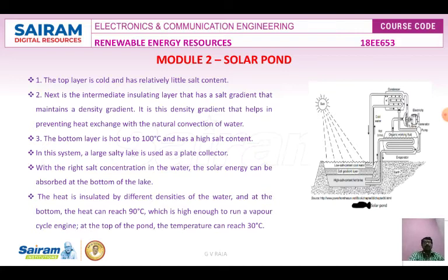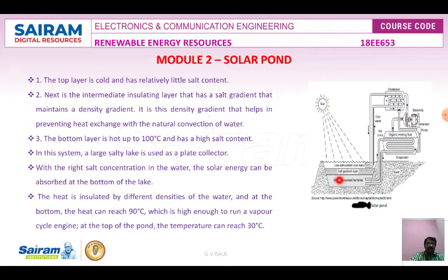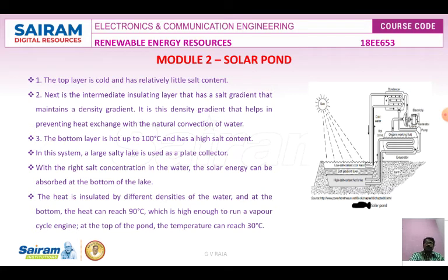To develop a solar pond, the pond is filled with three layers. The top layer has a small amount of salt content. The intermediate layer is an insulating layer where a salt gradient is maintained based on density gradient. The bottom layer is a hot layer maintained at 70 to 100 degrees Celsius, requiring high salt content. These different salt concentrations create different densities in the water, which prevents the development of convection currents that would otherwise transfer heat to the surface of the pond.